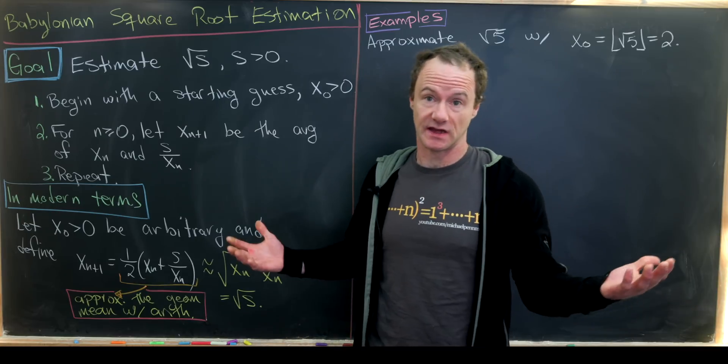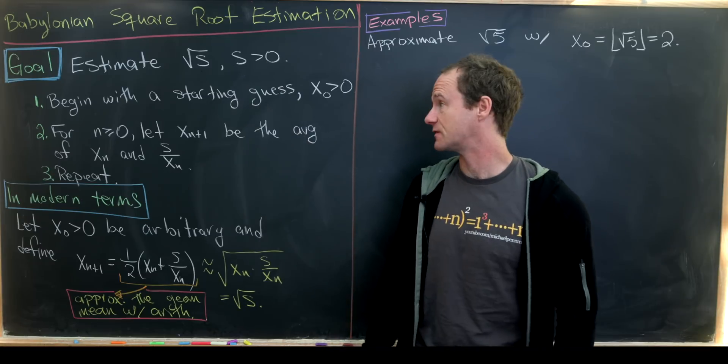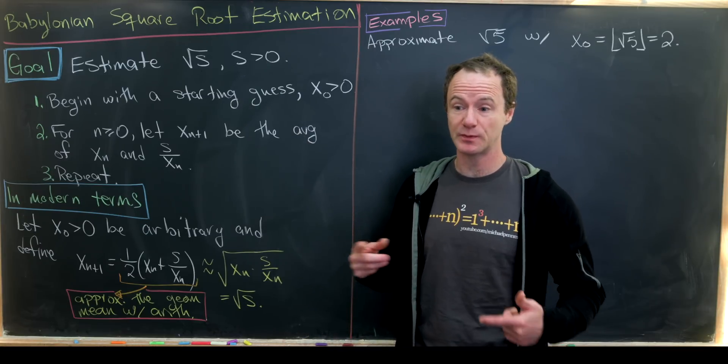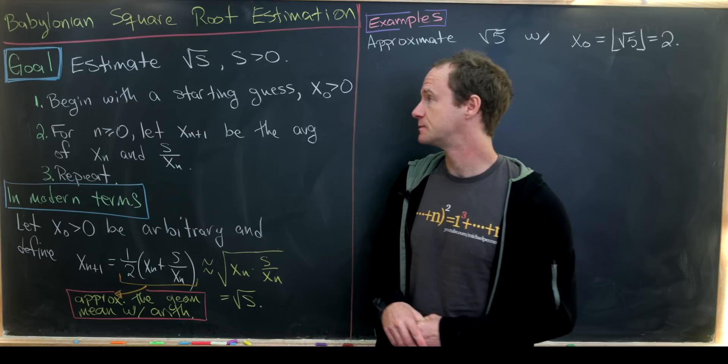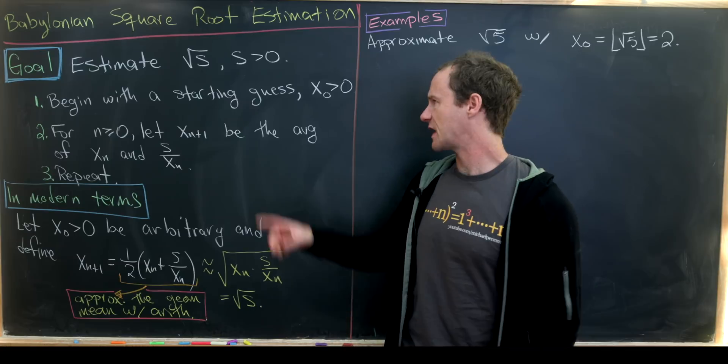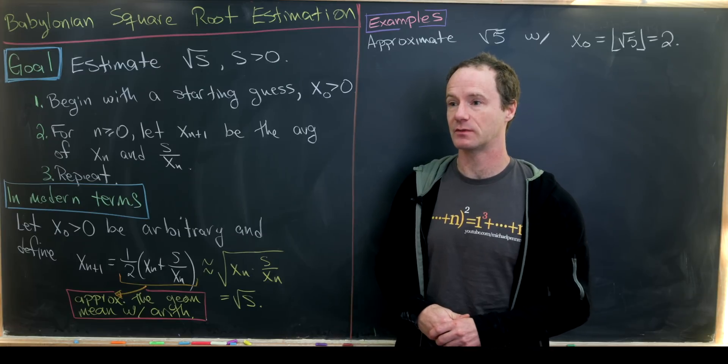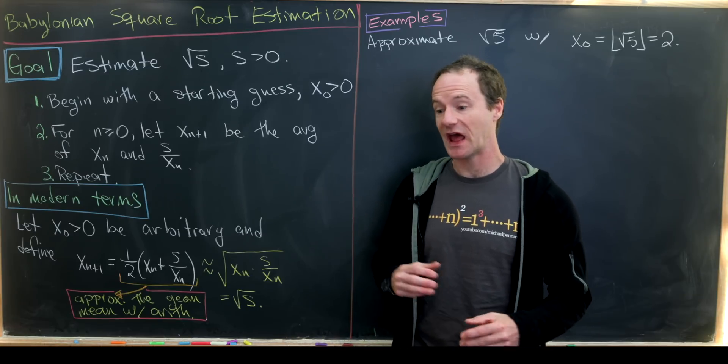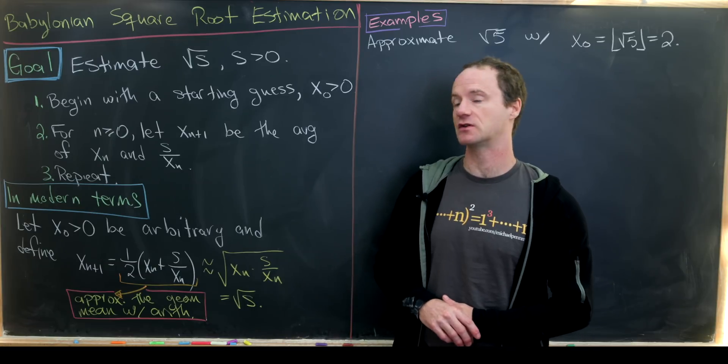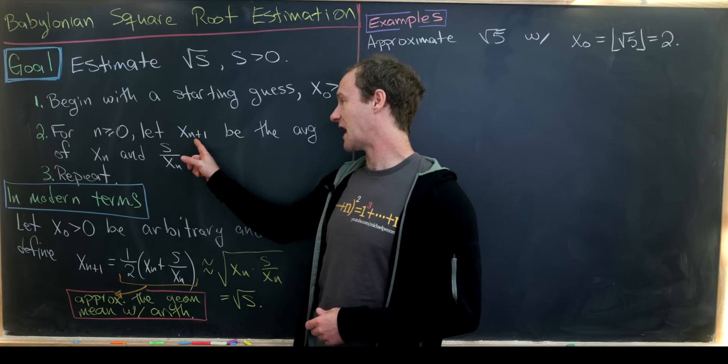So let's say our goal is to estimate a square root, the square root of s, where s is a positive real number. This technique involves doing a loop of better and better approximation. Our first step is to begin with a starting guess, we'll call that starting guess x₀, and that really can be any positive real number. As we'll see with some examples, it helps to start close to the square root, but you don't actually have to start very close.